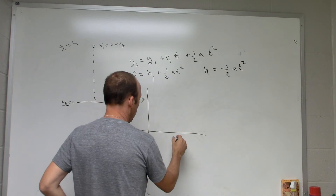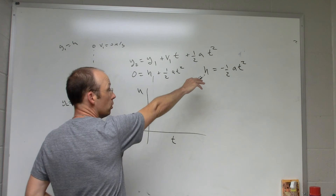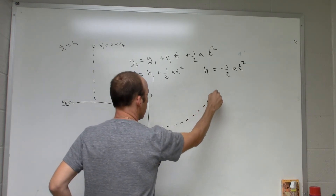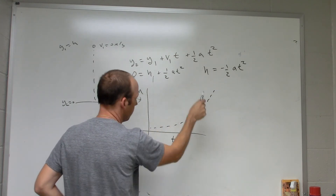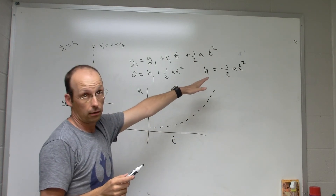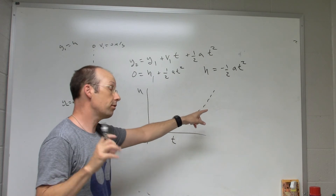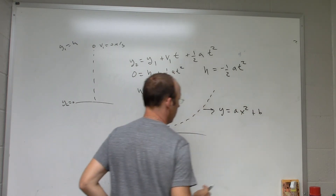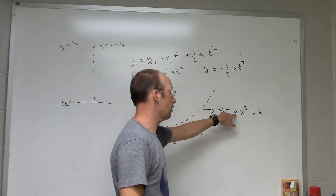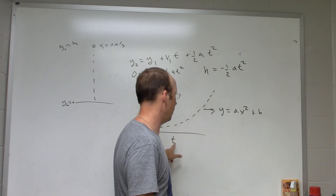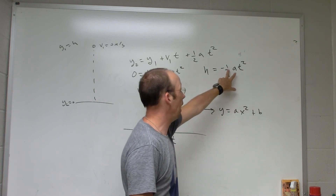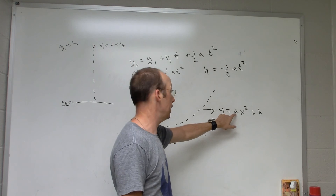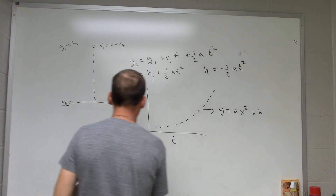One option is to plot t versus h. As time increases you get larger heights, so the graph looks like a parabola. If you use a computer program you can fit y equals a x squared plus b to the data. Here the coefficient in front of t squared is one-half the acceleration, so the acceleration equals twice that fitted coefficient. I have tutorials on making that graph, but this method requires a computer.